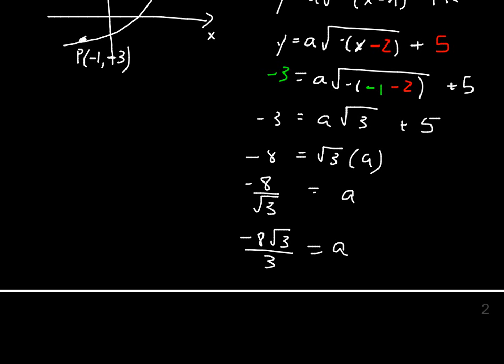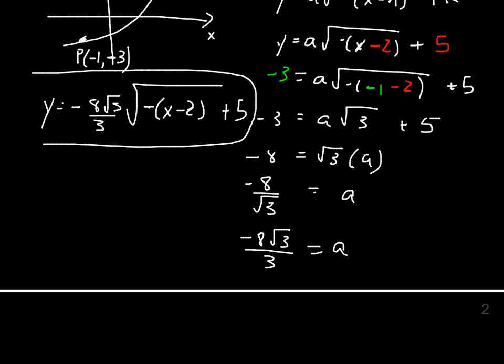Now I'm going to rewrite my formula finally, nicely. It's going to be y equals negative 8√3 over 3 square root of negative, because my b is negative, x minus 2, minus 2, plus 5. So here's my formula. Great, so I've got the formula. My a parameter is a little bit complicated, but that's alright.